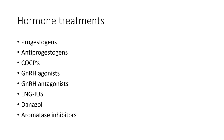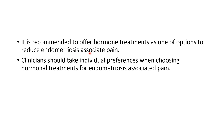For hormonal treatment of endometriosis, the available drug categories are: progestogens, anti-progestogens, combined oral contraceptive pills, GnRH agonists, GnRH antagonists, levonorgestrel intrauterine system, danazol, the anti-androgen drug, and aromatase inhibitors. It is recommended to offer hormonal treatment as one of the options to reduce endometriosis-associated pain. Clinicians should take individual preferences into account when choosing hormonal treatments, as you cannot give the same treatment to every patient.